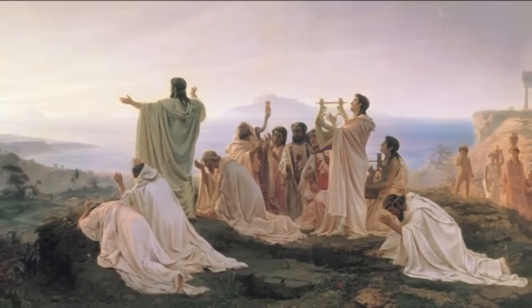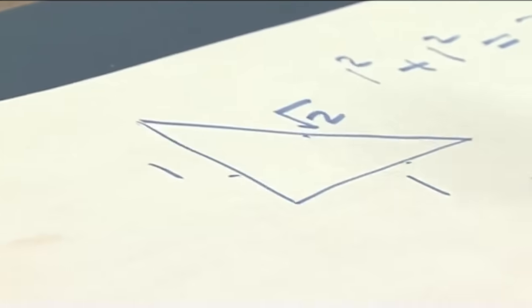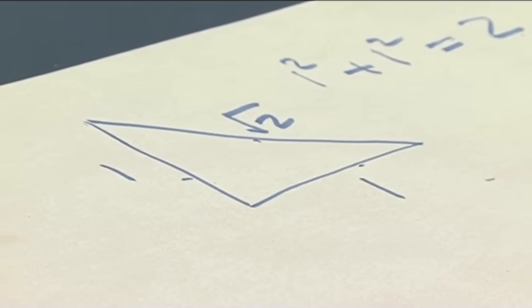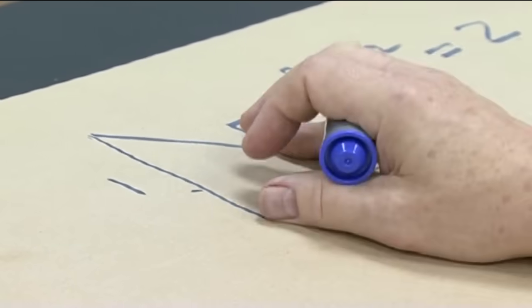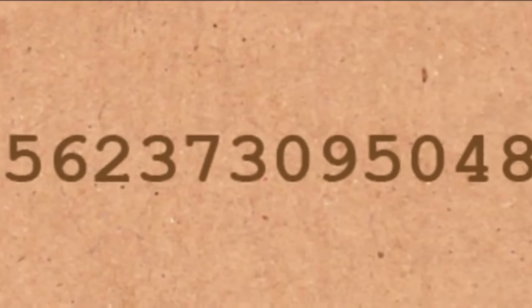There was a disciple of this strange sect called Hippasus. And he worked out that if you had believed in this theorem, Pythagoras' theorem,